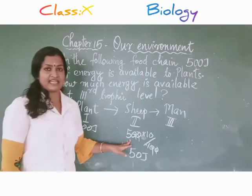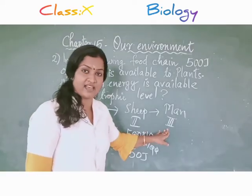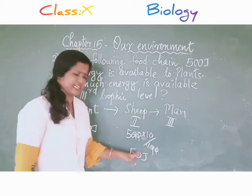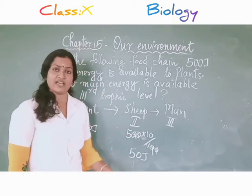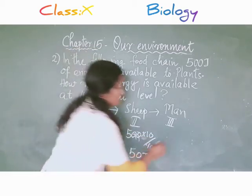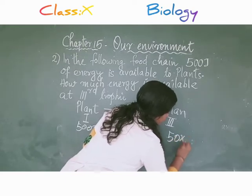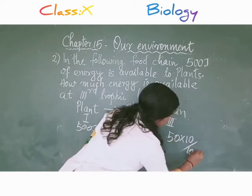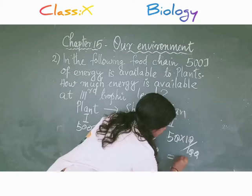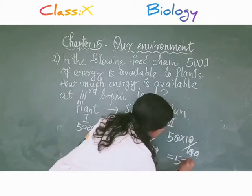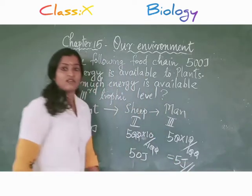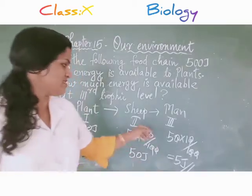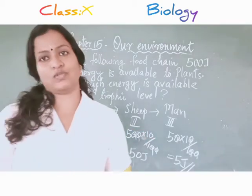So what will be the energy at the 3rd trophic level? You have to find out 10% of the 50 joules: 50 into 10 by 100. The answer is 5 joules. So the answer is 5 joules.